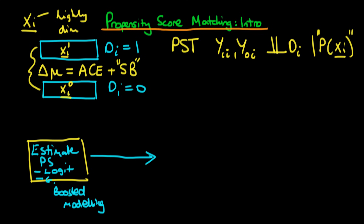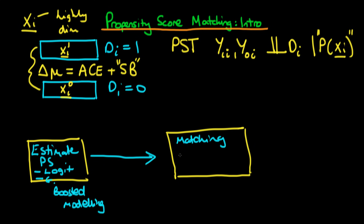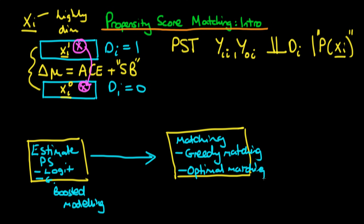After we've estimated propensity scores, the next step is the issue of matching. The idea with matching is that we typically match across individuals, and there are a number of different ways in which we can match. Some techniques fall under what is known as greedy matching, and another class is known as optimal matching. The premise behind both procedures is exactly the same: we're trying to find individuals within our untreated group which have similar levels of propensity scores to those within the treatment group.